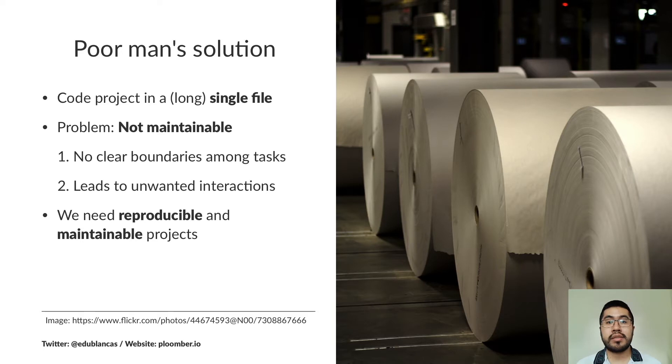What's the easiest way to automate execution? We can just code the entire project in a single file and in a really long file. The problem is that if we have the code that loads the data, that cleans it, that transforms it, that trains a model, that outputs some model evaluation charts, there are really no clear boundaries among these different parts.